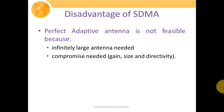The disadvantage of SDMA systems is that a perfect adaptive antenna is not feasible, because it would demand an infinitely large antenna, which is not possible. Therefore, we need to take a compromise between antenna gain, antenna size, and directivity. This compromise inevitably affects signal quality.